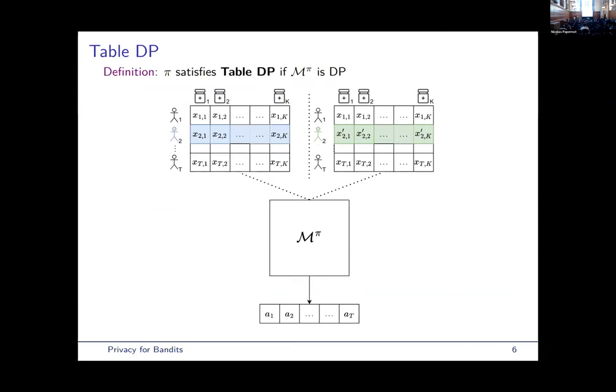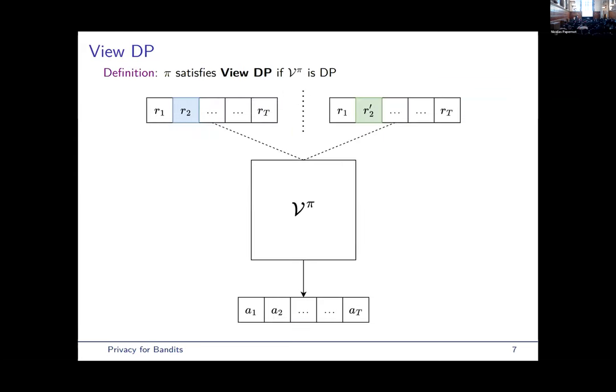So, the first one we call table DP, and the idea here is that basically we have two parallel universes. The policy interacts with two patients in the first one, and the same, but one different patient. And the idea here is that the policy satisfies table DP if the distribution over sequence of actions is close enough between these two universes. And the thing that I want to stress here is that when a policy recommends an action to a patient, it only observes the reward corresponding to that action. So, if I recommend medicine 2 to patient 1, I only observe X subscript 1, 2, and not the other elements of the row.